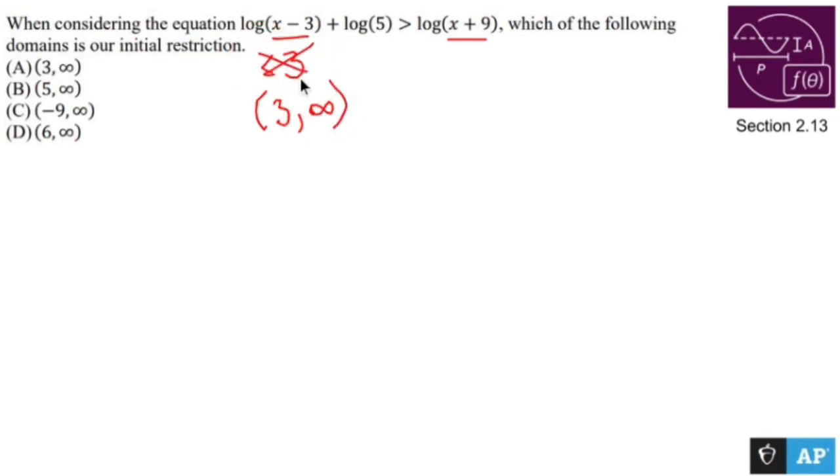Okay, those are no good. I'm not allowed to plug in negative 9 or anything less than that, which means my domain for this is going to be negative 9, including negative 9, and bigger than that, because I'm not allowed to have the log of zero.